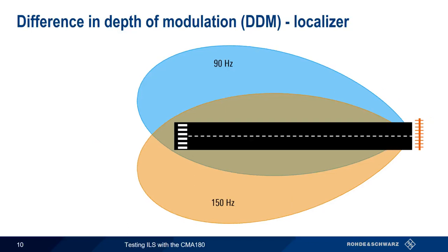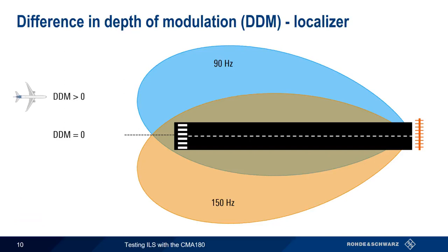An aircraft exactly centered on the runway centerline will see the same AM modulation depth on both lobes, and the DDM will be zero. Moving to the left of the centerline — more into the 90 Hz lobe — causes DDM to increase, or become more positive. Moving to the right of the centerline, or more into the 150 Hz lobe, causes DDM to decrease or become more negative. These changes in DDM are what cause the needle to move right and left on a localizer dial.